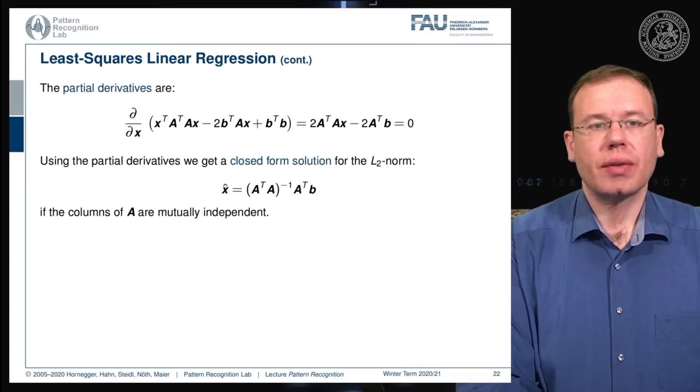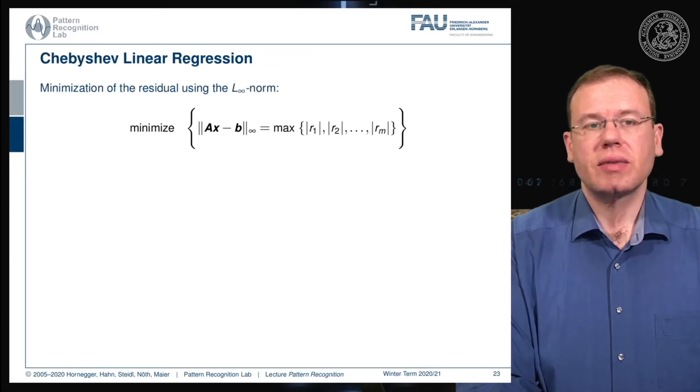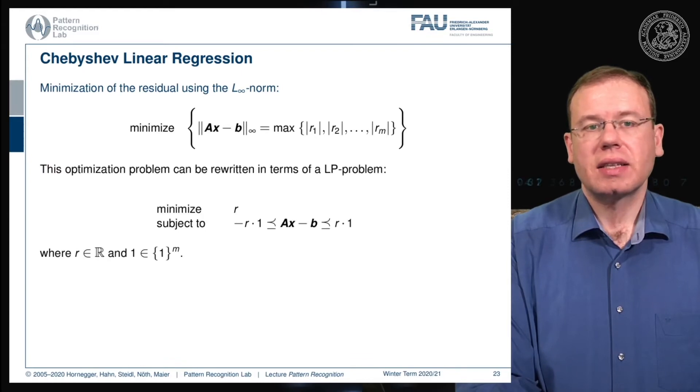What happens if we do other norms? If we use the maximum norm, the result would be the maximum over the absolute value of the respective residuals. This can be rewritten into an optimization problem where we minimize the residuals subject to constraints. The difference of the respective residuals lies between minus r times a vector of ones and the upper bound r times a vector of ones. We're trying to shrink those boundaries as close as possible around our remaining residuals.